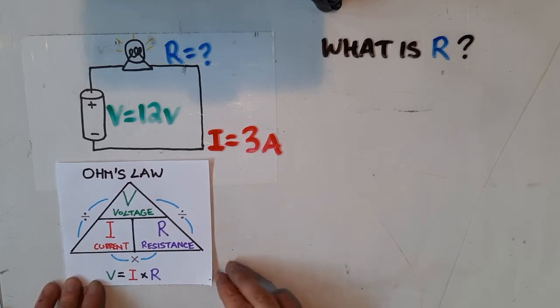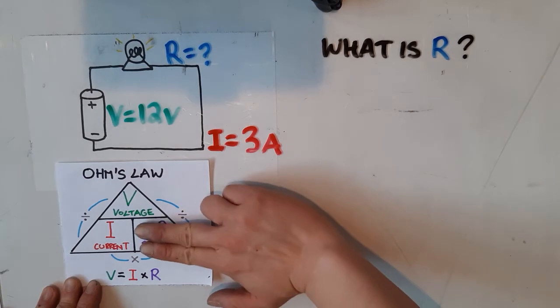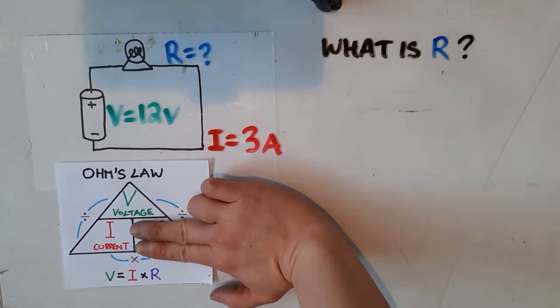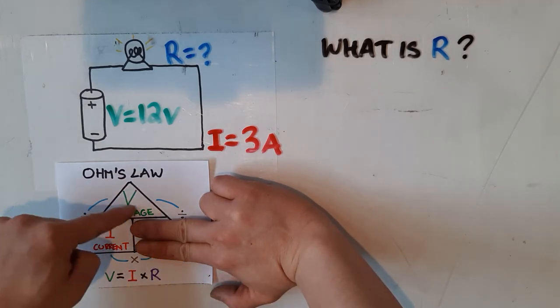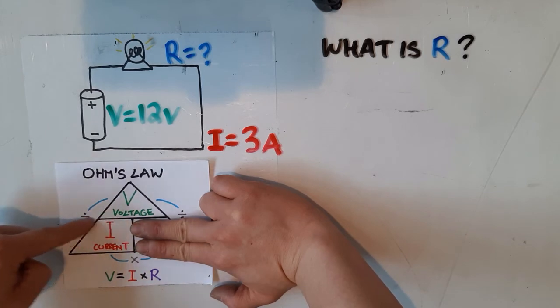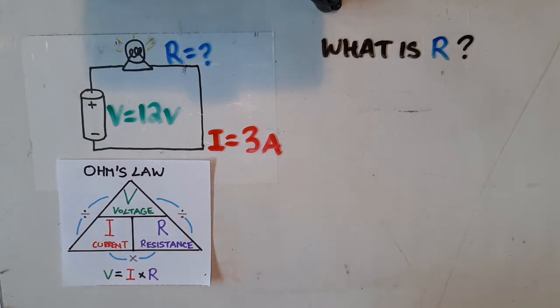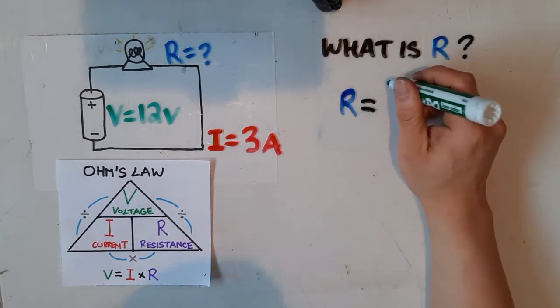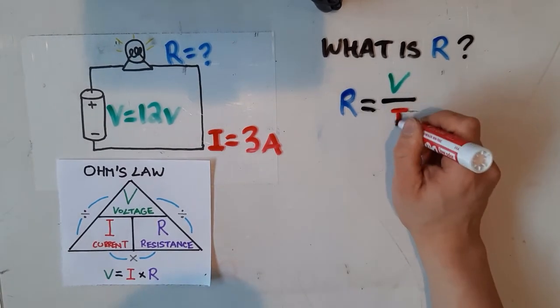To do that, we're going to go back to our Ohm's law pyramid, and since I'm solving for resistance, I'm going to cover up that part of the triangle, and that's going to reveal to me the formula, which is voltage divided by current. So I'm going to start by writing down the formula. So resistance equals voltage divided by I for current.